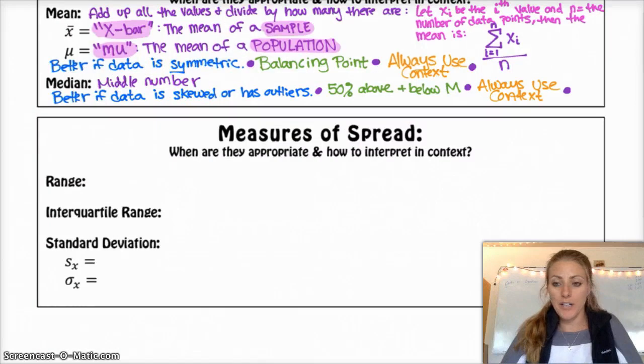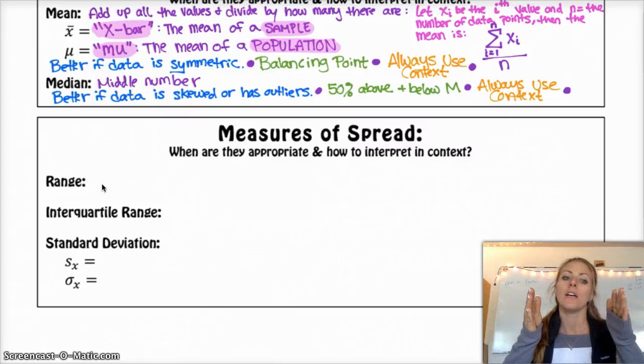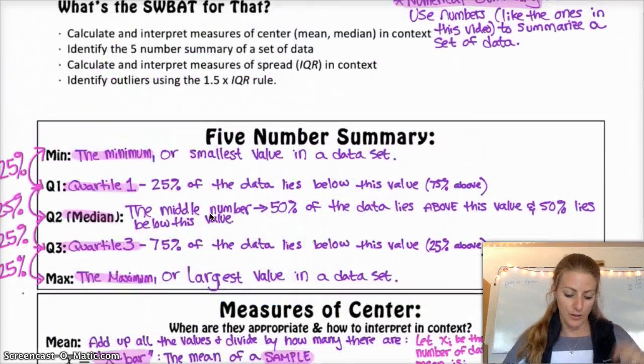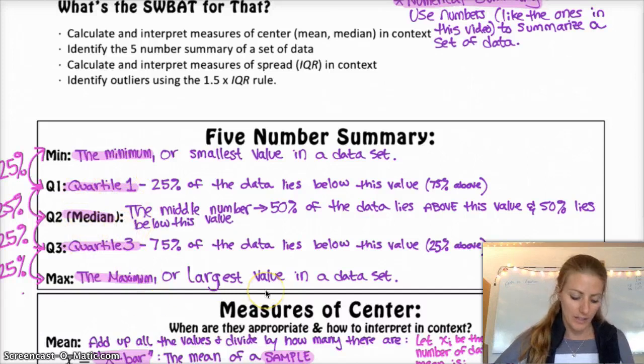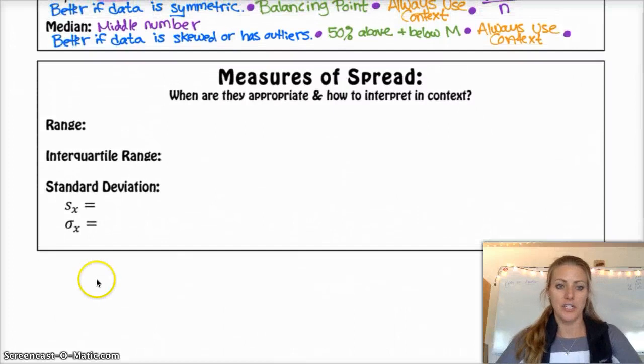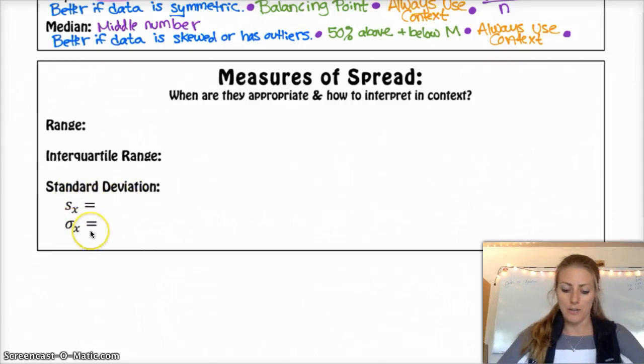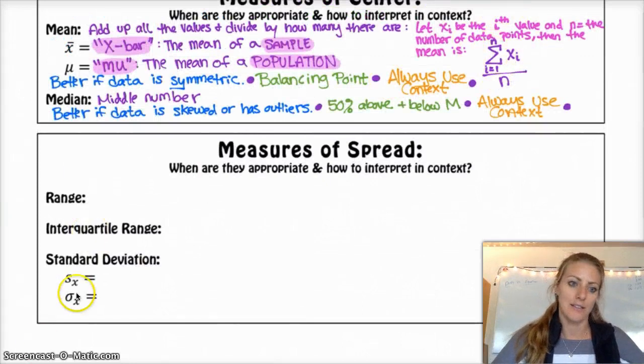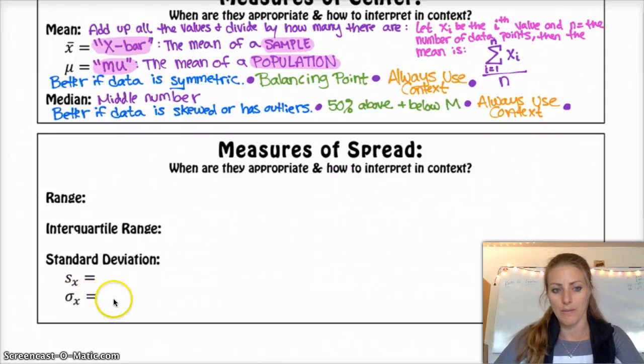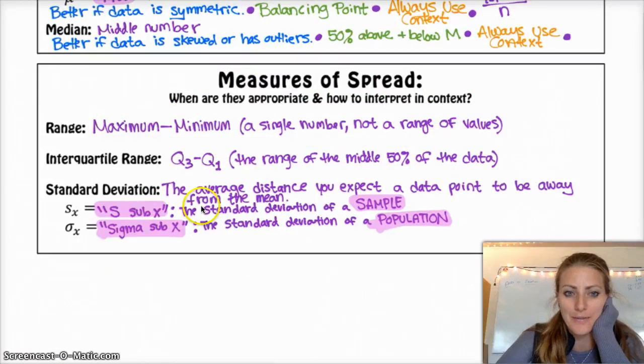Measures of spread. We're not going to go gravely into detail on these. The range is just the maximum value minus the minimum value. The interquartile range is Q3, so your third quartile minus your first quartile. It's just kind of the range of the middle 50% of the values. Standard deviation measures the average distance away a given point is from the mean. This is an uppercase sigma. This is a lowercase sigma. This lowercase sigma is standard deviation for a population. S of X is a standard deviation for a sample.